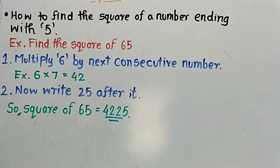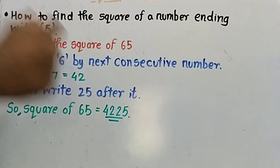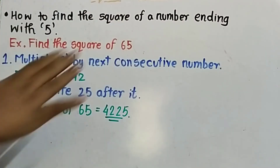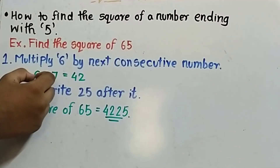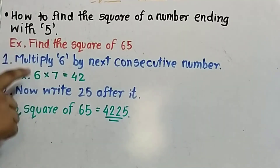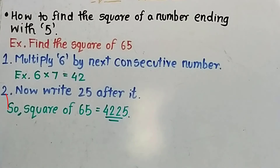There is a second technique to find the square of a number ending with 5. For example, find the square of 65. Take the 10th digit, which is 6, and multiply it by the next consecutive number, 7: 6 into 7 equals 42. Then write 25 after it, since 25 is the square of 5. So the square of 65 is 4225.